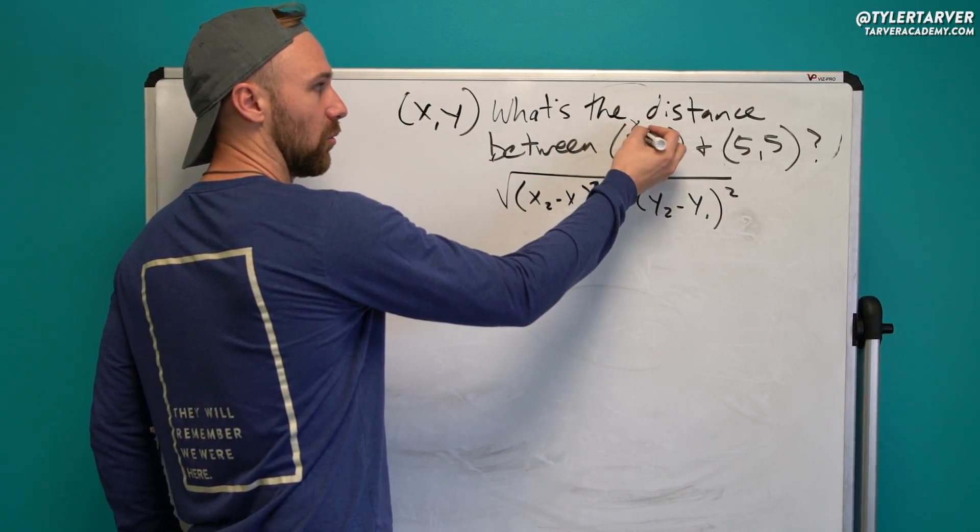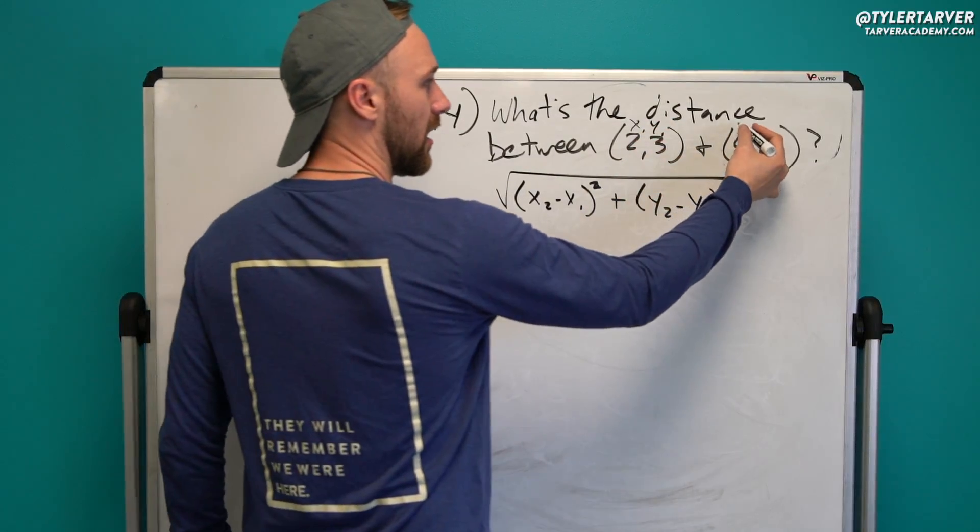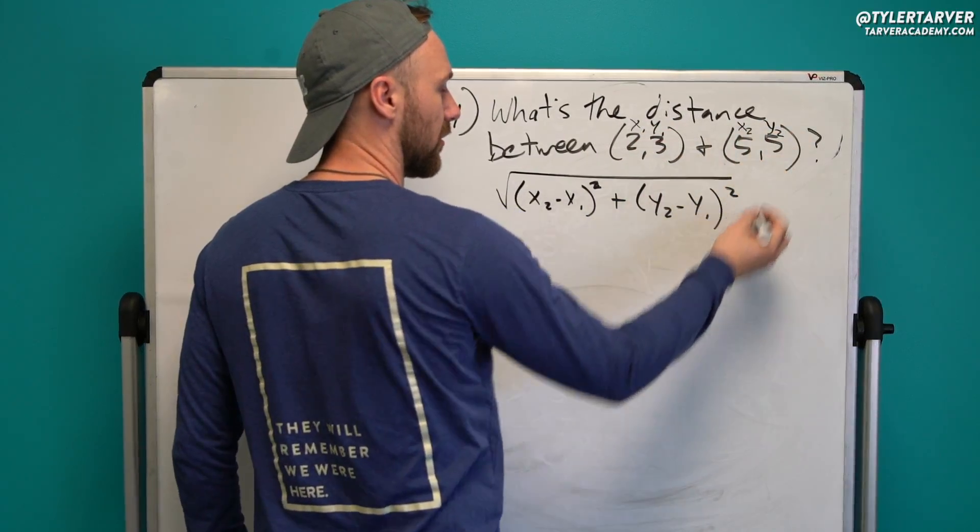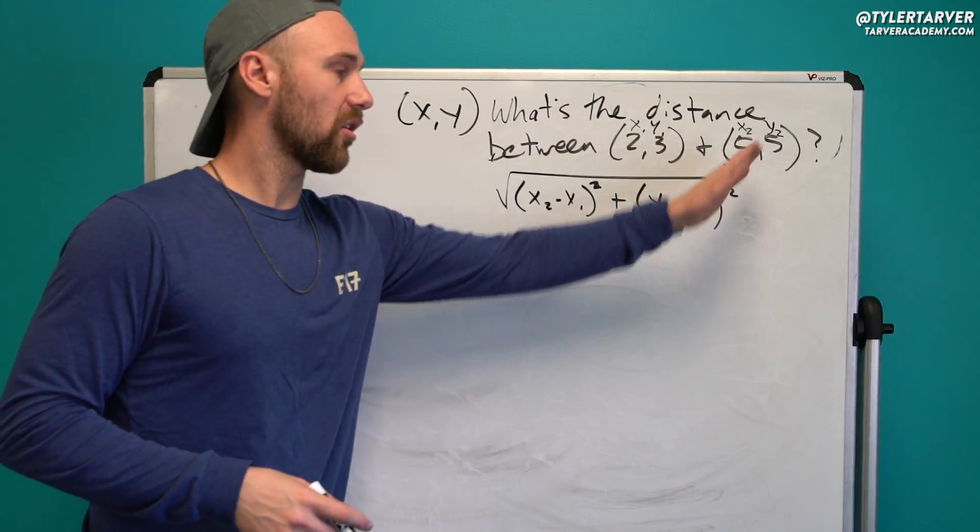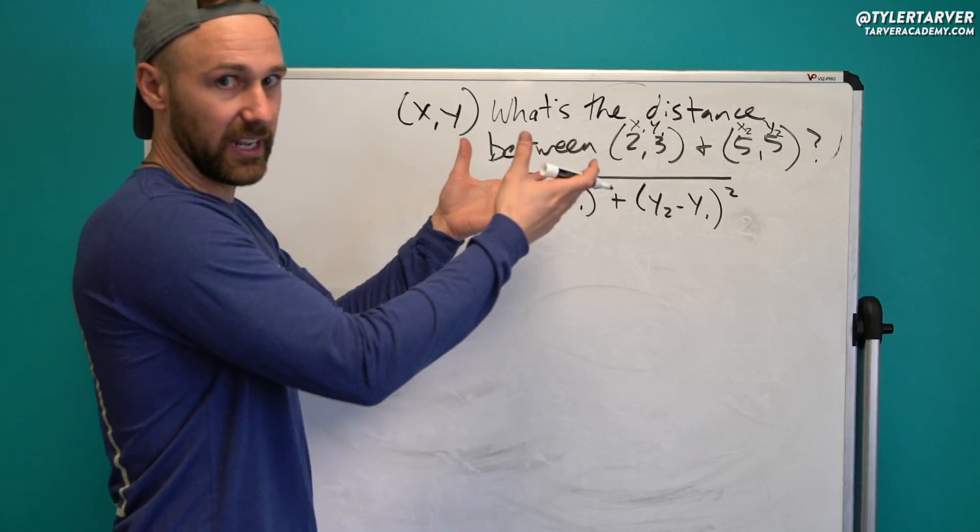So our x1, our y1, our x2, and our y2. If I label that, all I'm doing is plugging in what I've already delegated or delineated out of there.